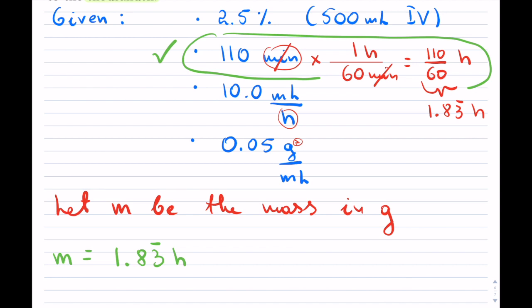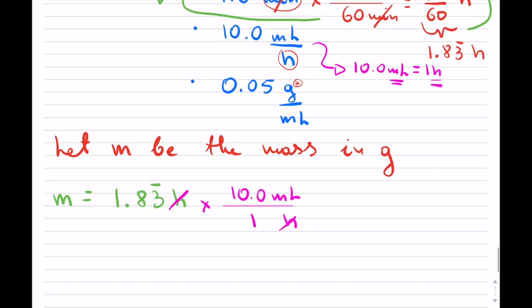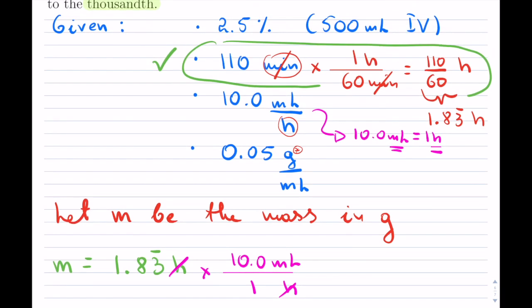Now let's try to solve this. So mass equals, I am going to start this. First I need to know how much medication have they received in the 110 minutes. So I have 1.83333 hours. They've been running it for that long. So that is from this piece of information right here. So how long have I been running this for? Now I'm going to use my second piece of information.